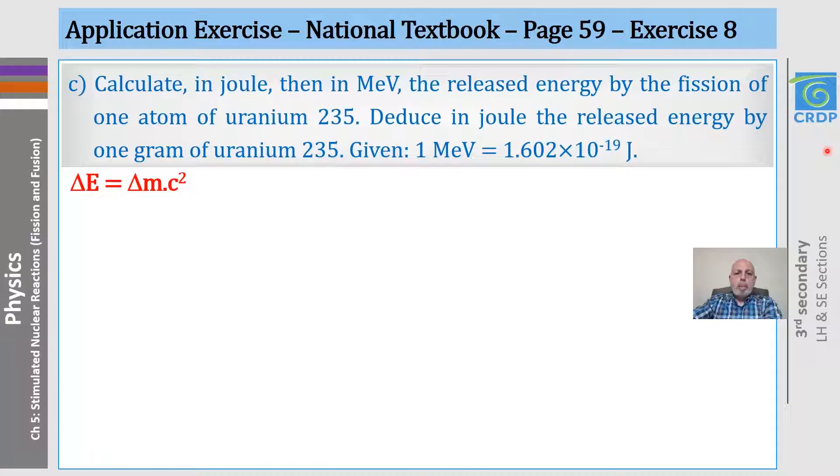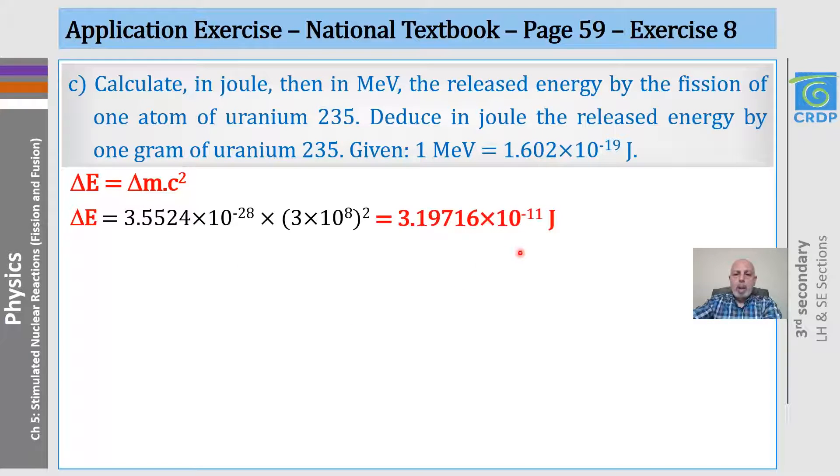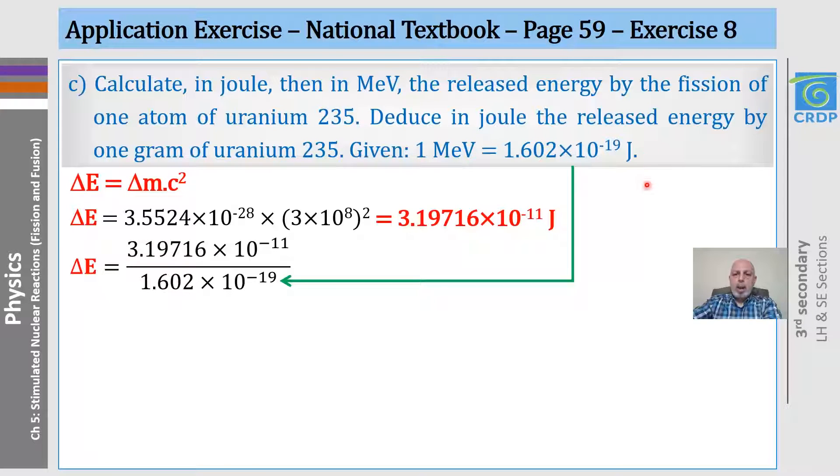We start by applying the mass-energy equivalence, using what we calculated already in the previous slide for delta M. Then, this is what we get in joules. To convert it to mega electron volt, we divide it by 1.6 times 10 to the minus 19, and this is what we get in mega electron volt.